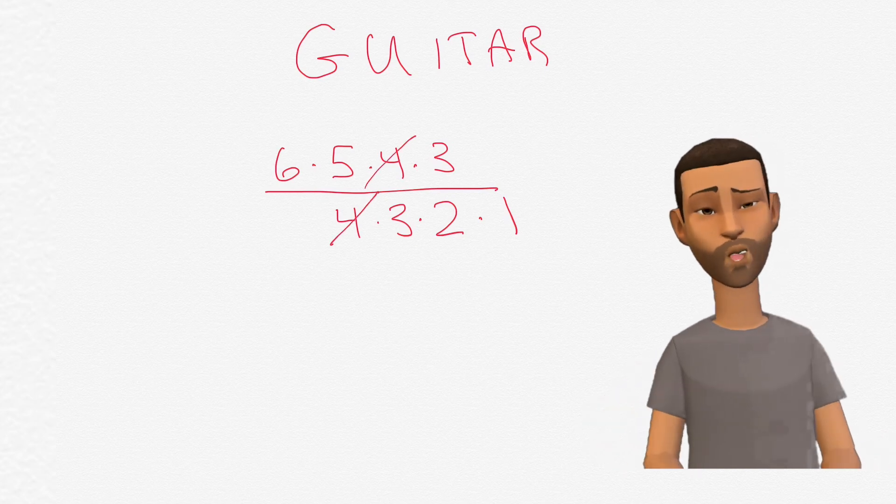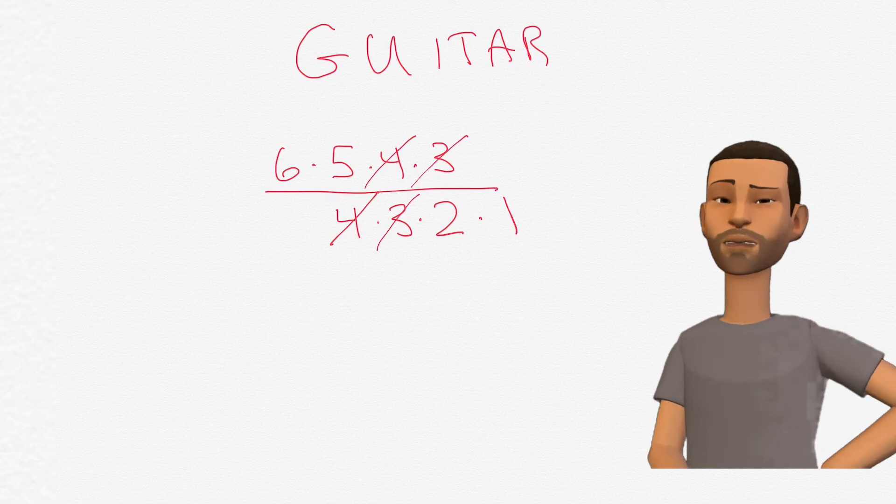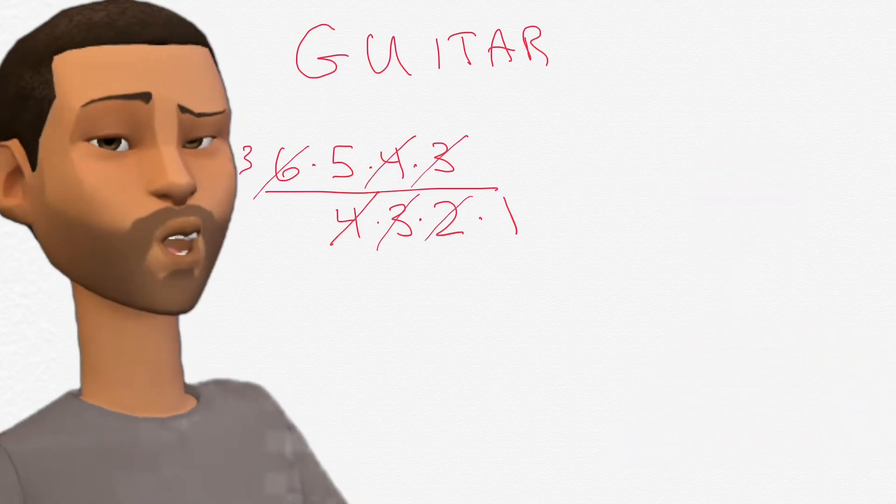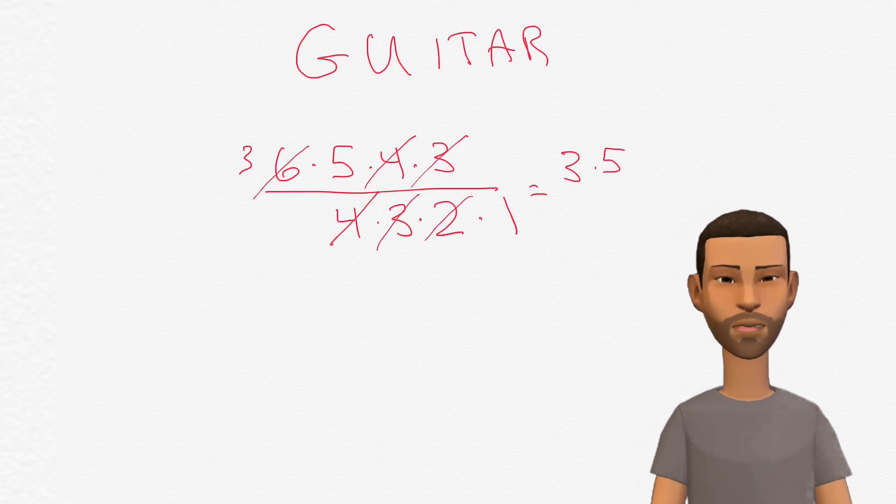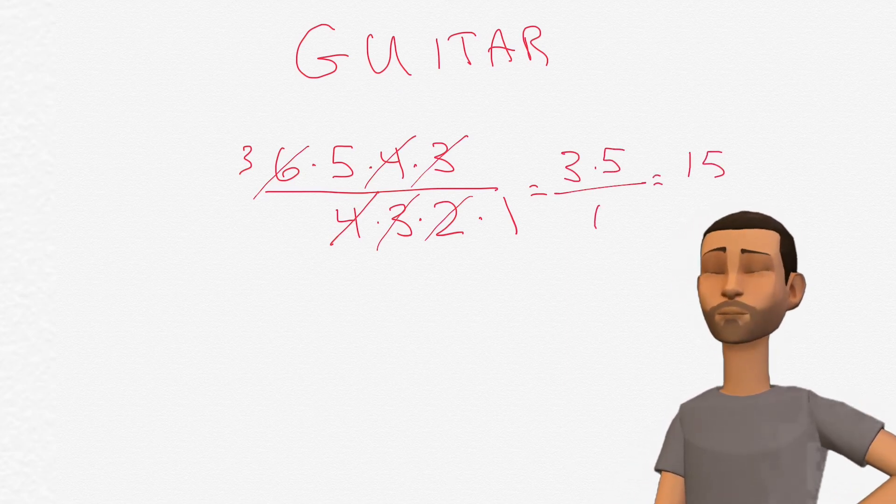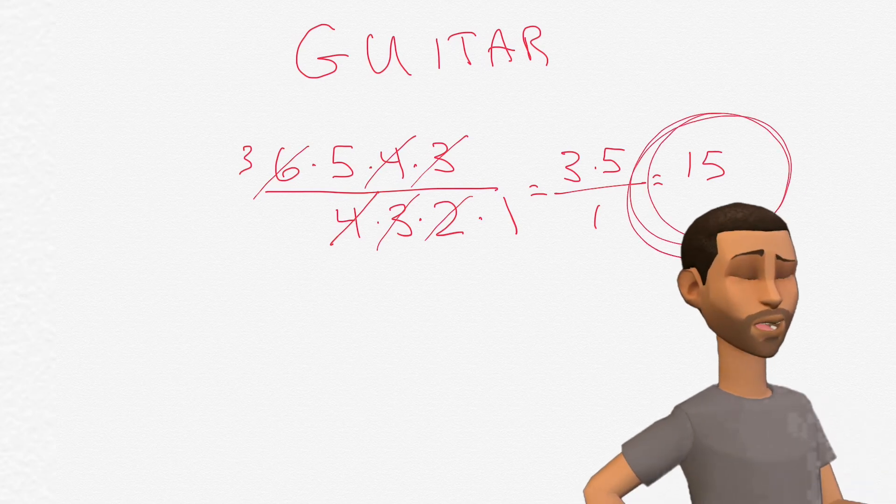The four and four cancels out. The three and three cancels out. And the two goes into six three times. So we are left with the numerator of three times five and nothing in the denominator. And three times five equals fifteen.